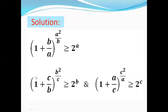Using the same analogy, we can write (1 + c/b)^(b²/c) is greater than or equal to 2^b, and (1 + a/c)^(c²/a) is greater than or equal to 2^c. Note that all the terms are positive, so we can multiply them together to get greater than or equal to 2^a multiplied by 2^b multiplied by 2^c.